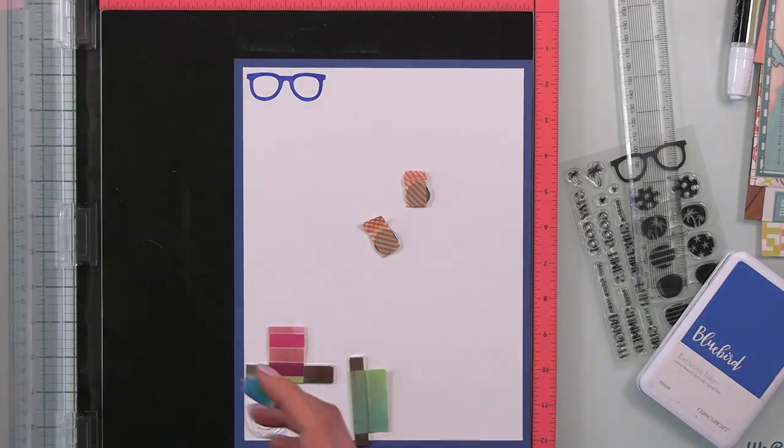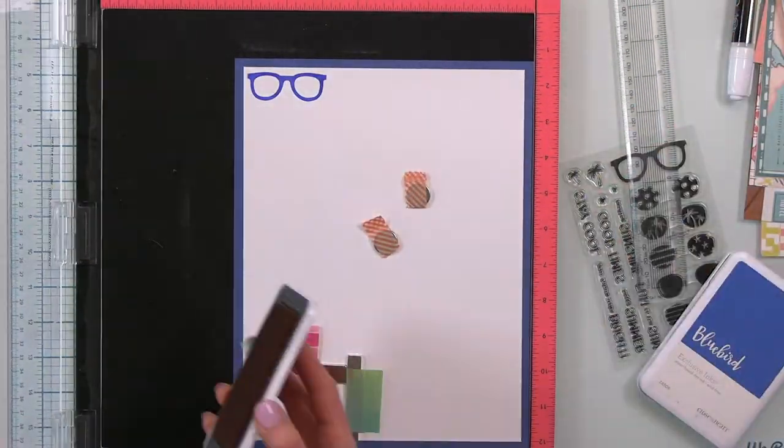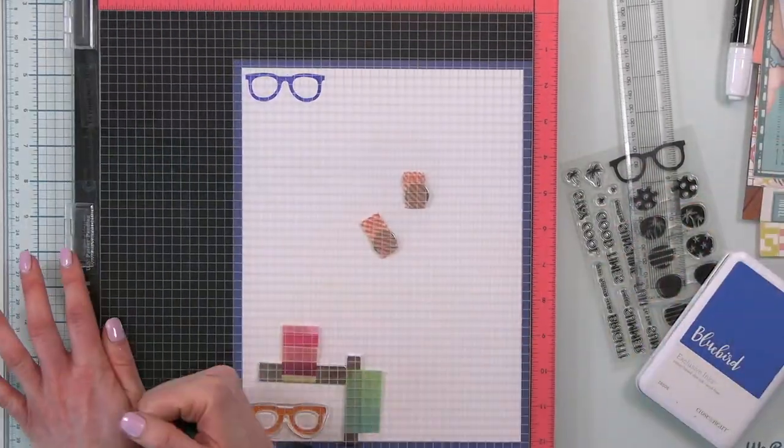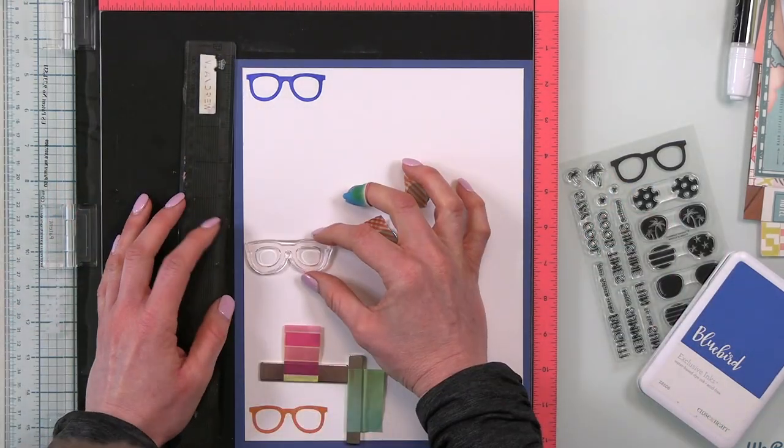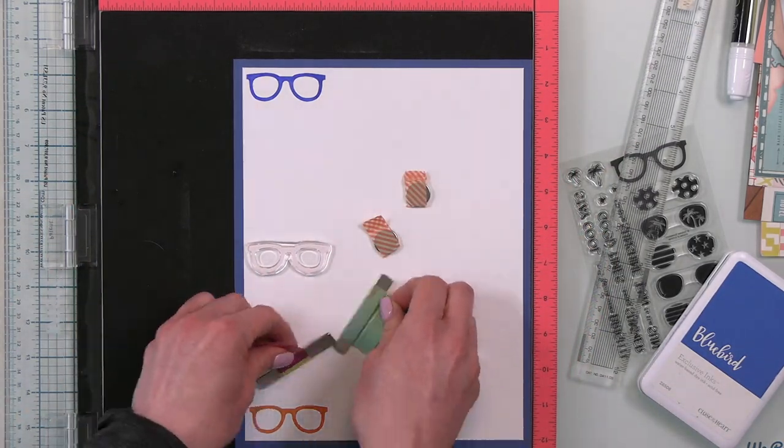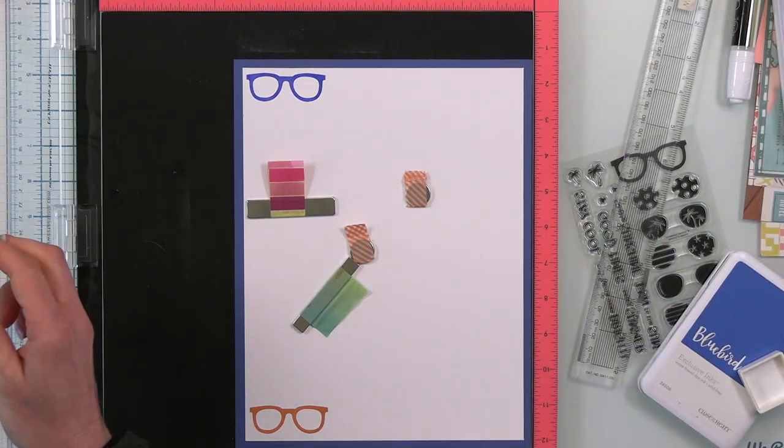So the way I'm going to do this, because I want a nice long row of sunglasses, I'm starting at the top and then I'm going to the bottom. My next frame that I stamp will be directly in the center. So I am finding my center point, putting my sunglasses in that center point and then inking up.